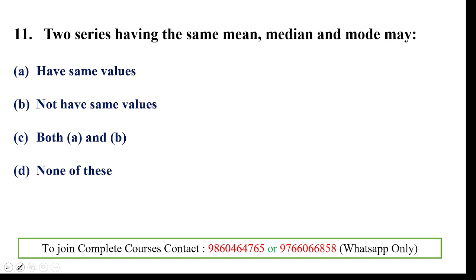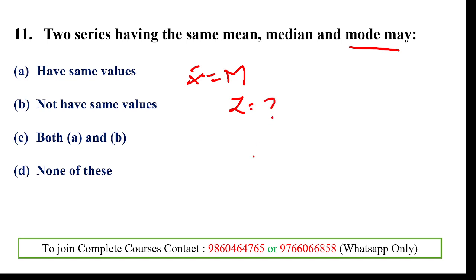Next: two series having the same mean and median may differ in mode. When mean equals median, the mode may not have the same value — mode may change across the two series.